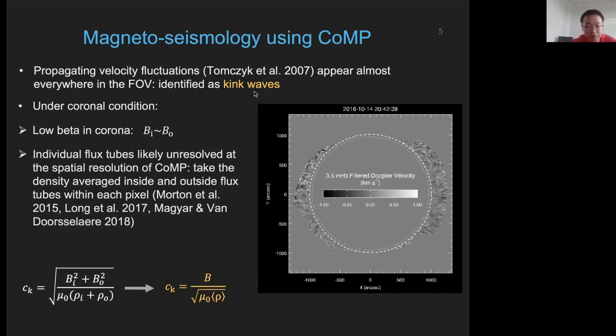So these transverse waves, they are most likely kink waves. The phase speed of kink waves is given as this equation here in the white color. However, in the solar corona, because of the low plasma beta, we can assume that the magnetic field strength inside and outside flux tube is basically the same. And because of the spatial resolution of CoMP, an individual flux tube is unlikely to be resolved, so the density we get should be an average value inside and outside flux tubes within each pixel. Under such conditions, the original phase speed is simplified as the orange colored one. From this simple expression, we can see that if we can measure the phase speed of these waves and the density in the corona, we can immediately obtain the corona magnetic field strength.